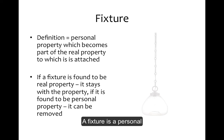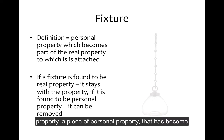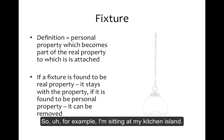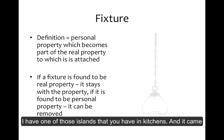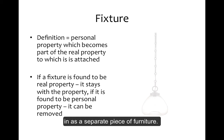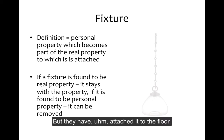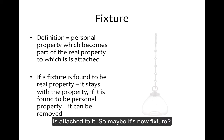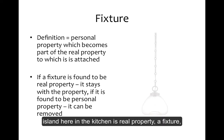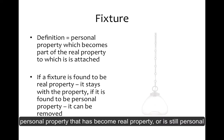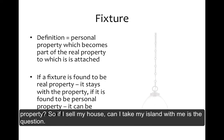A fixture is a piece of personal property that has become real property because of something that's happened. For example, I'm sitting at my kitchen island — one of those islands that you have in kitchens — and it came in as a separate piece of furniture, so that's personal property, I can move it. But they have attached it to the floor and then my wood flooring comes up and is attached to it. So maybe it's now a fixture. How would I know if my island is real property, a fixture, or still personal property? If I sell my house, can I take my island with me is the question.